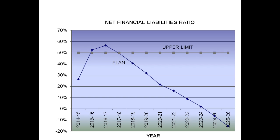What this shows is whether Council is capable of covering all debt compared with its operating revenue. The graph shows Council's upper limit at 50% of our operating revenue, so the more the line moves away from the upper limit, the better the Council's capacity is to meet its financial obligations.